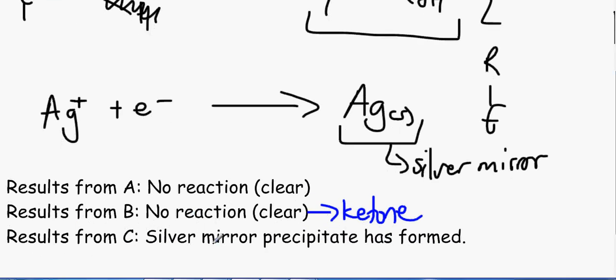And over here, a silver mirror precipitate has formed. So we know it's an aldehyde.